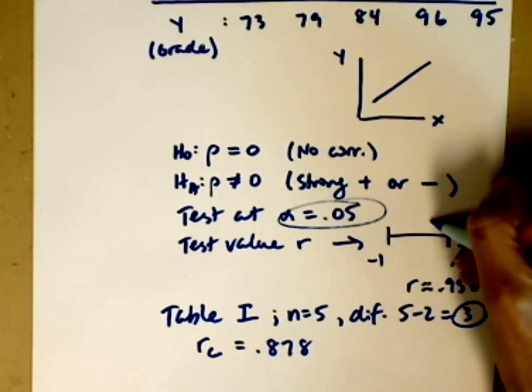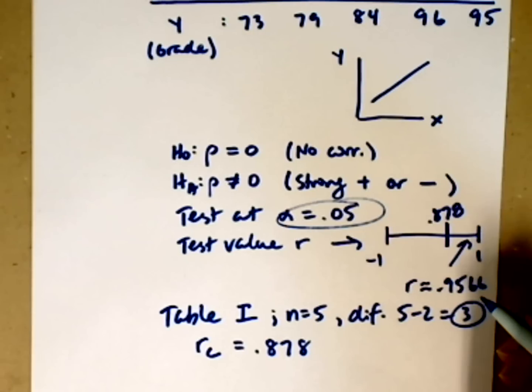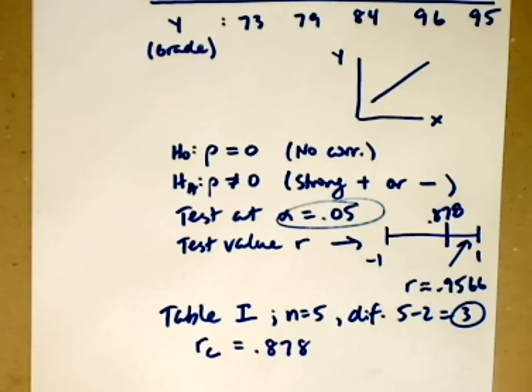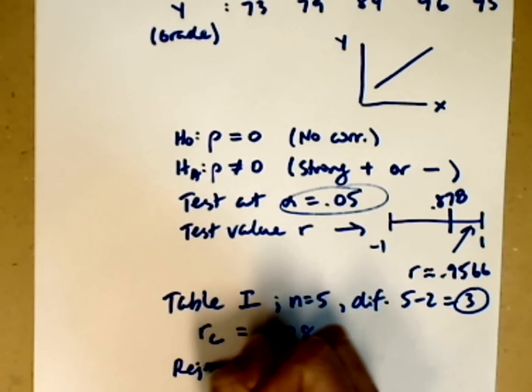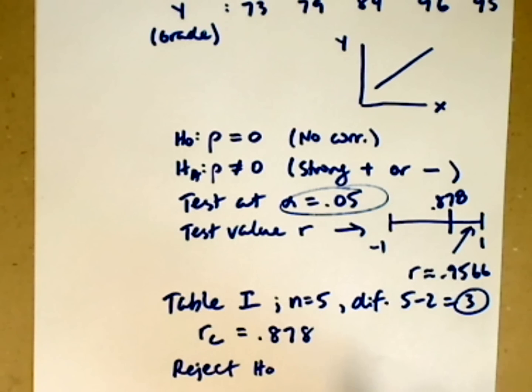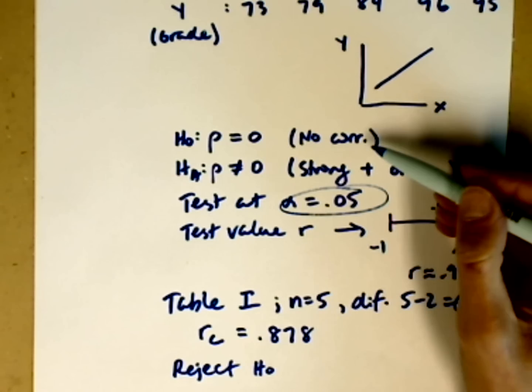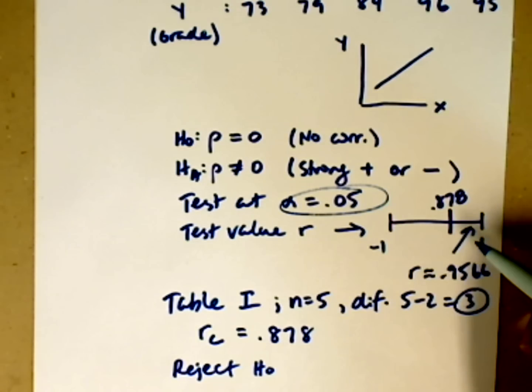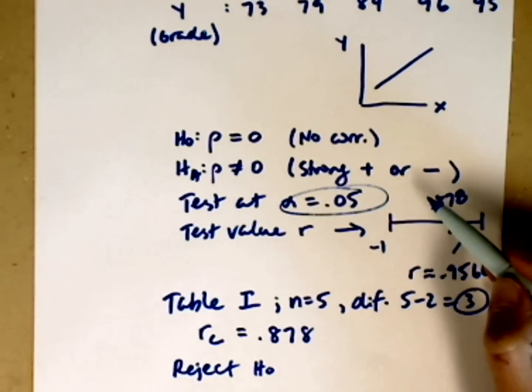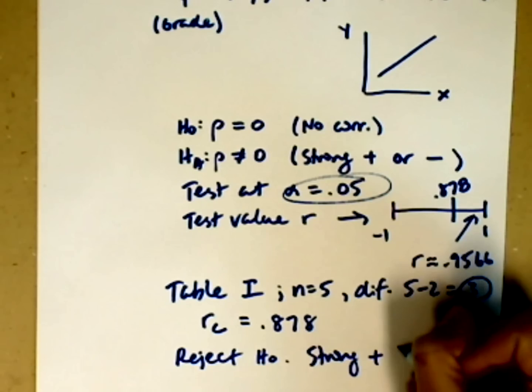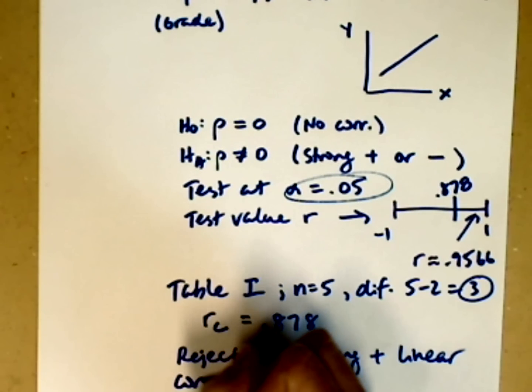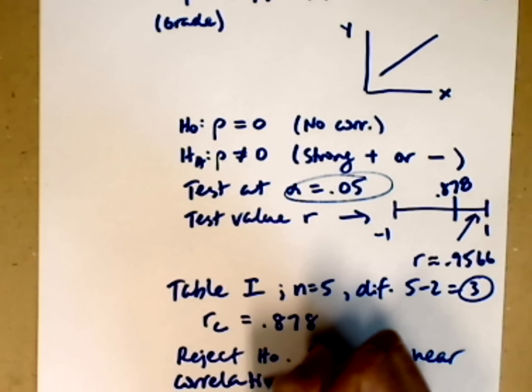My cutoff then is .878. I am well within the rejection region. So that means that for our test, we can reject the null hypothesis. The null hypothesis said that there is no correlation. We have a large enough r value, a large enough correlation coefficient, to conclude that we have a strong positive linear correlation. So I can say that there is a strong positive linear correlation, which means that I can add a second step. I've finished my test.